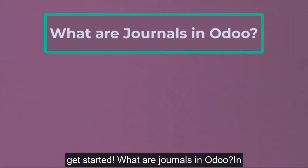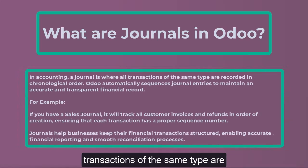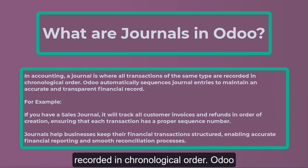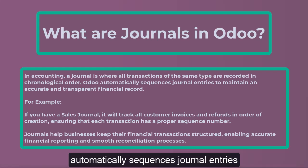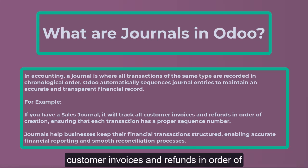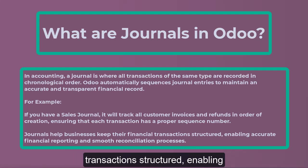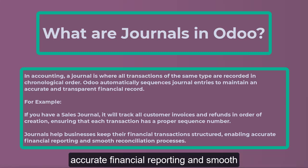What are journals in Odoo? In accounting, a journal is where all transactions of the same type are recorded in chronological order. Odoo automatically sequences journal entries to maintain an accurate and transparent financial record. For example, if you have a sales journal, it will track all customer invoices and refunds in order of creation, ensuring that each transaction has a proper sequence number. Journals help businesses keep their financial transactions structured, enabling accurate financial reporting and smooth reconciliation processes.